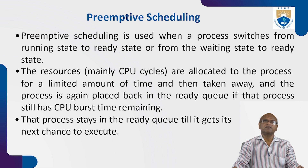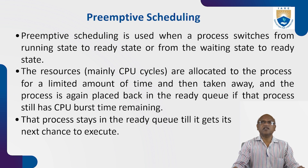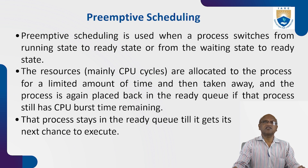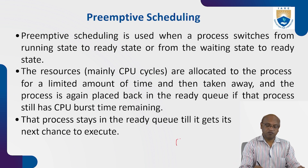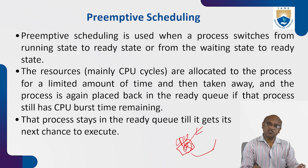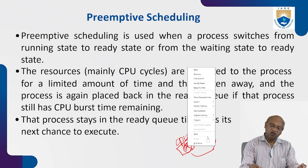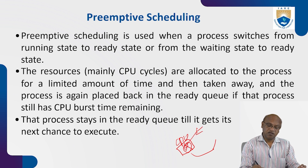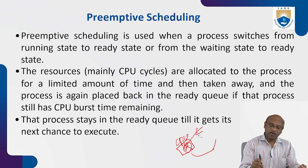Preemptive scheduling is used when a process switches from the running state to the ready state, or from the waiting state to the ready state. If a high-priority job arrives in the ready queue while the CPU is running another operation, the current job is forcibly stopped and sent to the waiting or ready queue, and the high-priority job is sent to the CPU for execution. Forcefully stopping the CPU's current job and sending a higher-priority job is called preemptive scheduling.